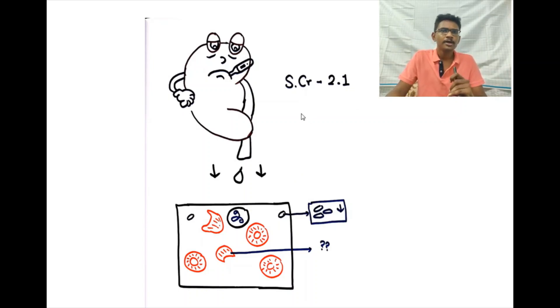Then her peripheral smear was done. In that, we were finding cells like this and her platelets were assumingly low. In hemogram, complete hemogram, we found her hemoglobin to be 7 grams and platelets to be 80,000. And counts were normal.